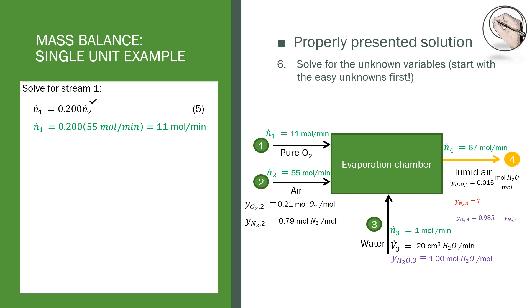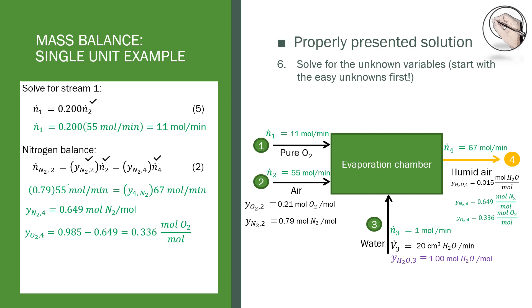Finally we can do a nitrogen balance, because unlike oxygen, nitrogen is only in two streams and it's easier to solve. We know all the other variables so we can solve for the molar composition of nitrogen. We can then use our knowledge that components or species in a stream add up to one to solve for the molar composition of oxygen in stream 4.